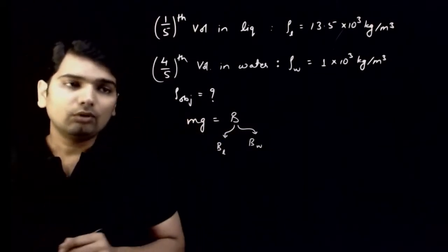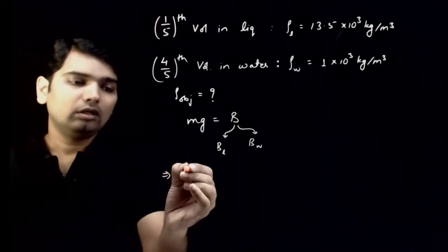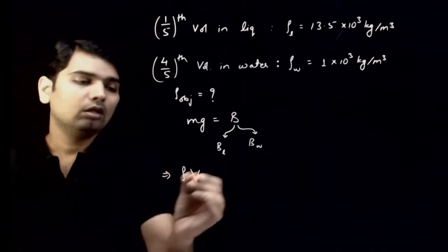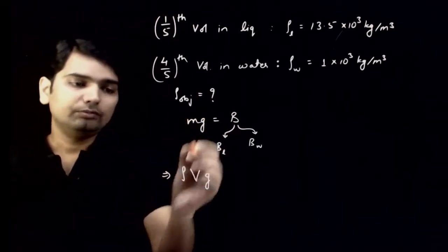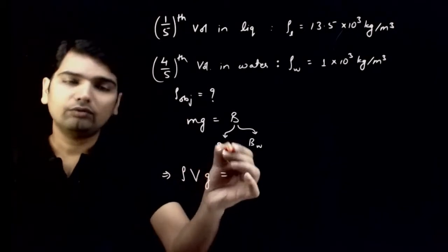If I use this volume to be V, then mass is how much will it be? I will write the density, I will write the volume of V into g. This is mg. Density into volume mass multiplied by g is equal to buoyant force of liquid.